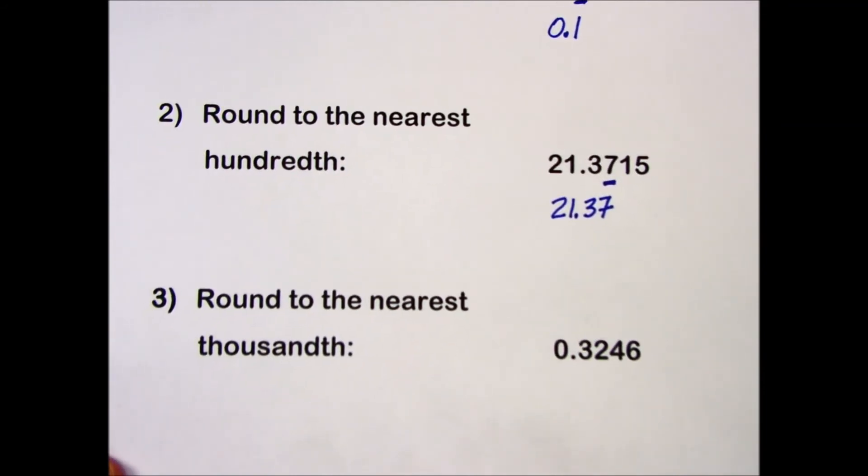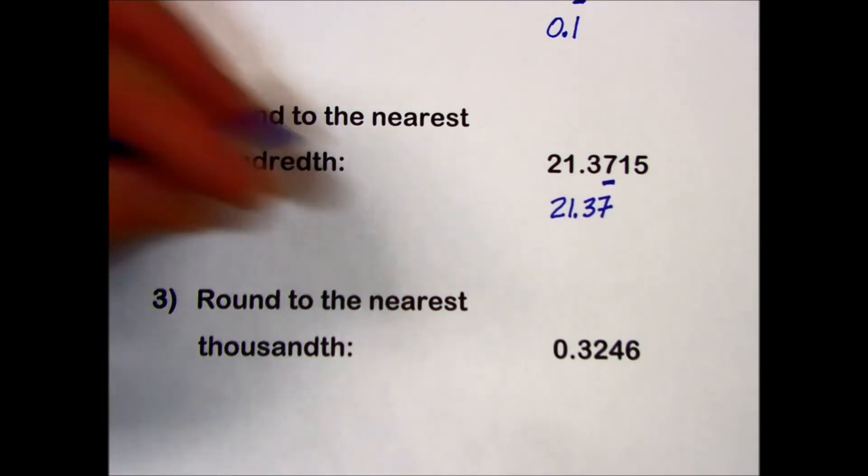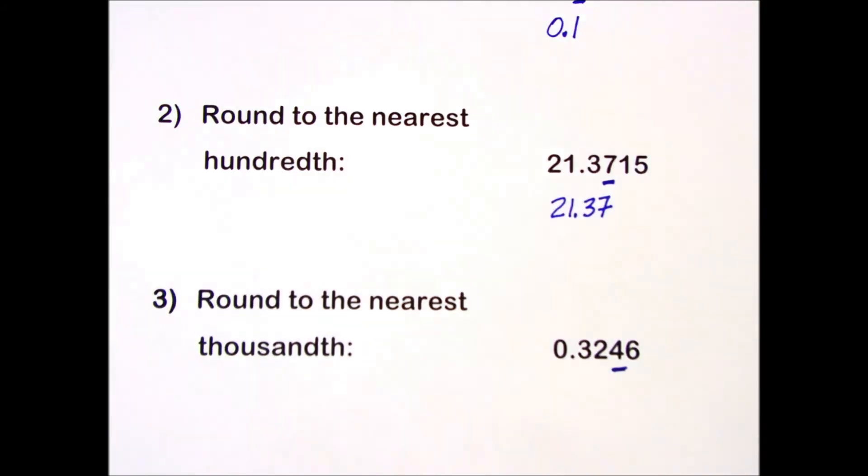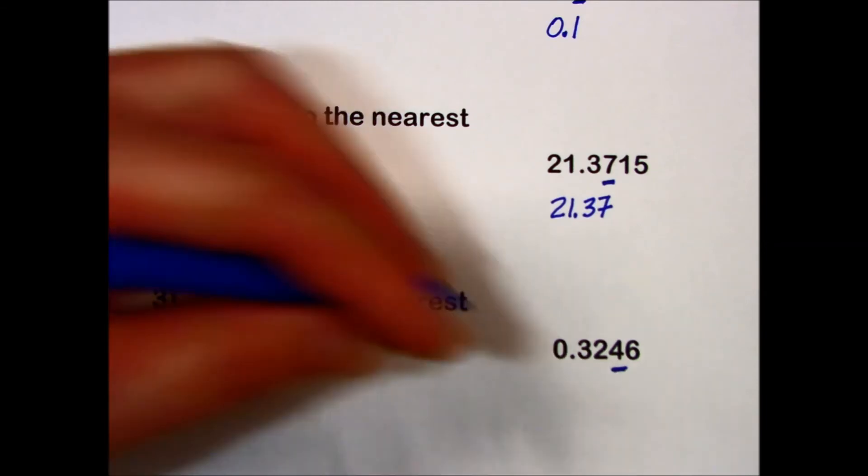The third problem, we are going to round to the nearest thousandth. We underline the place to which the number is rounded. The number to the right of the underlined number is 5 or greater, so we round the 4 to a 5 and drop the 6.